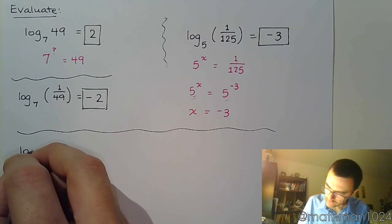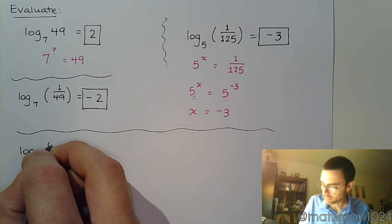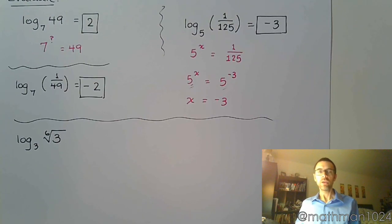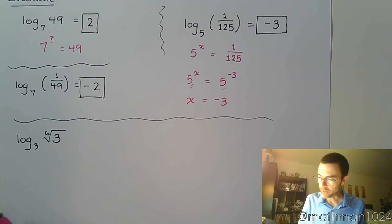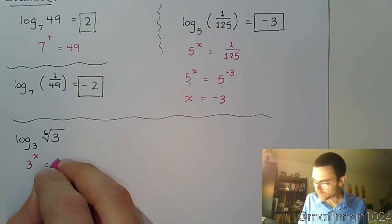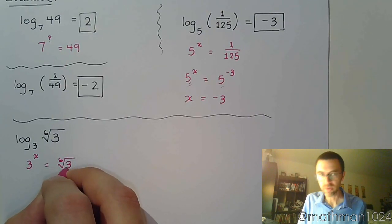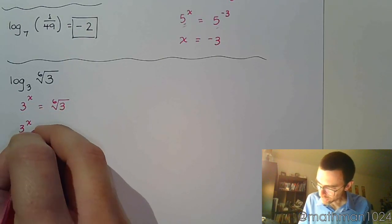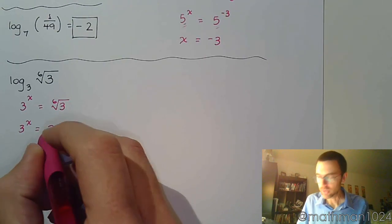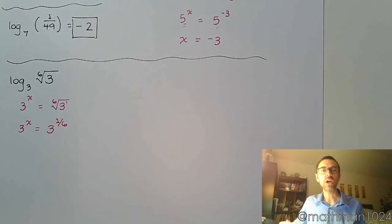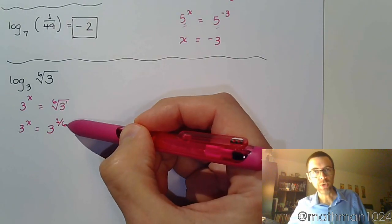If I do log base 3 of the 6th root of 3, oh my. Well, we can think about this, again, as something that's exponential, right? So I've got to think about this: 3 to some power, let's call that x, is equal to the 6th root of 3. Well, in a previous video, we talked about how we can rewrite the radical. We said how we can rewrite this to be 3, because that's my base. This is understood to be to the first power, so that's my numerator. Your index is the denominator of your power. So the index of your radical becomes the denominator of your power.